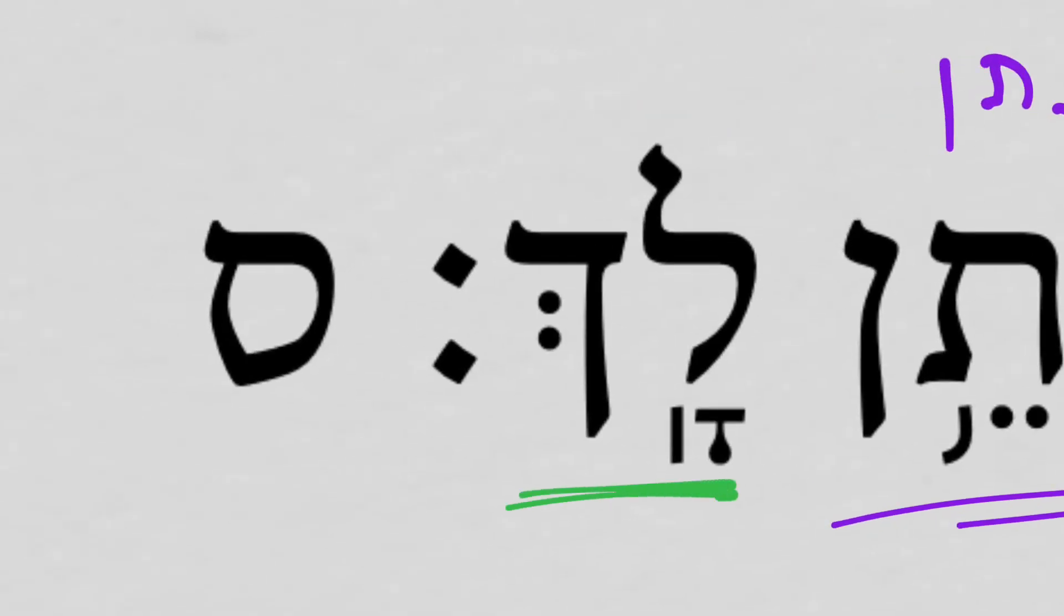We come to this last word, lach. This is a little bit tricky. This looks like a 2-fs pronominal suffix. That is, when we have the ha, that's the normal form of the 2-ms, and the ch is the normal form of the 2-fs. But this is actually a 2-ms pronominal suffix. The land that the Lord is giving you.